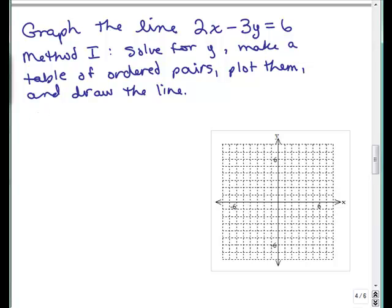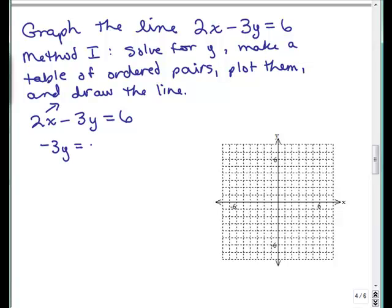So, for this problem, let's quickly do that. You could put this on pause, and then check and see if you did it the same way I did. I've got to subtract 2x from both sides. So, I have negative 3y equals negative 2x plus 6. Divide both sides by negative 3.